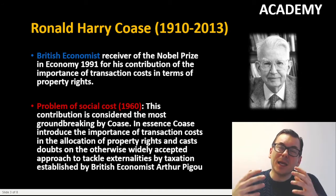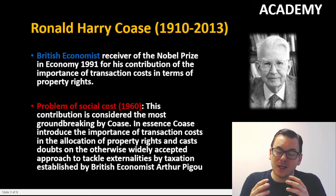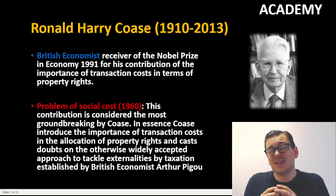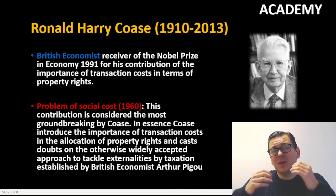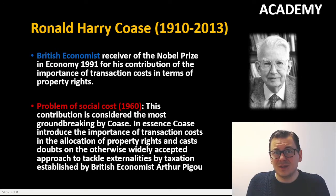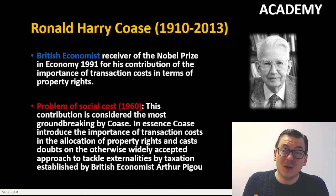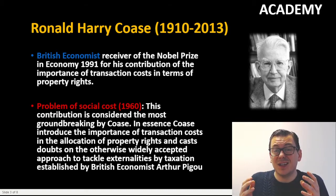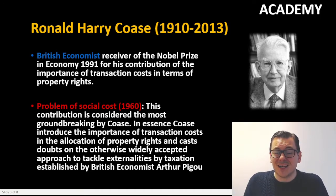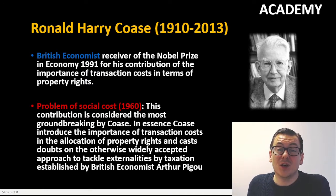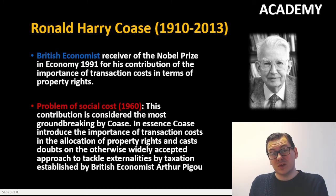One of the main things about his approach is that private parties can bargain their way out — hence we do not always need state interference, for example through taxation, which was the normal accepted approach presented by British economist Arthur Pigou before Coase came into the picture.